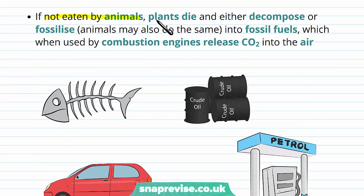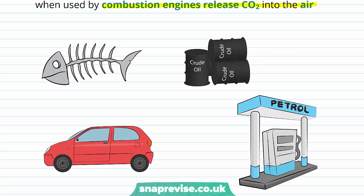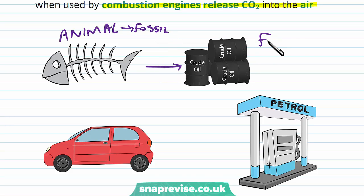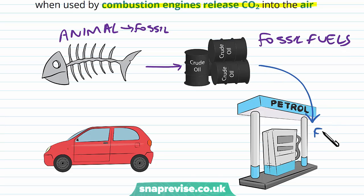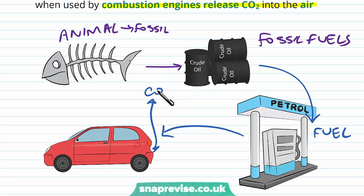If the plants aren't eaten by animals, the plants can die and either decompose or fossilise. Animals can also fossilise into what we call fossil fuels. The fossil fuels are what we use in combustion engines to release CO2 into the air and provide energy for our machines. For example, an animal such as a fish becomes a fossil, which turns into different forms of fossil fuels such as oils. We harvest these fossil fuels, which have been around for millions of years, and use them as fuel to drive machines. This releases CO2 that was trapped in these molecules back into the atmosphere.